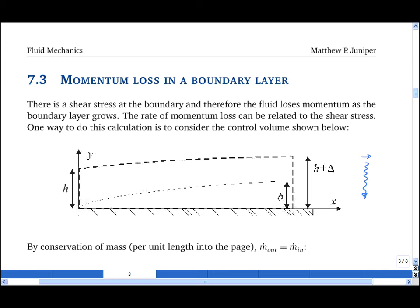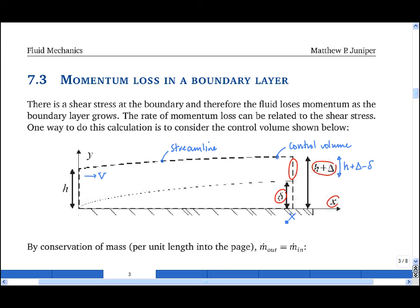One way to do this is with the large control volume shown here. At the upstream edge of the control volume, the free stream comes in at velocity V. The top edge is a streamline, and that means that no flow crosses that top edge. The downstream edge contains the boundary layer flow of height delta, the total flow of height h plus delta, and therefore a free stream flow of height h plus big delta minus little delta. The streamwise coordinate is little x. The length of the control volume in the horizontal direction is called big X, and the shear stress at the wall is a function of the horizontal position x.